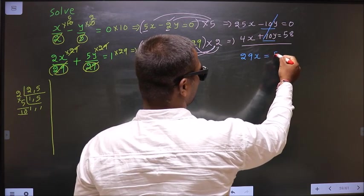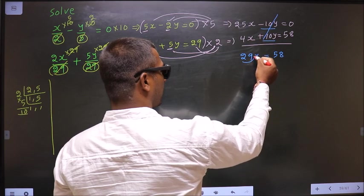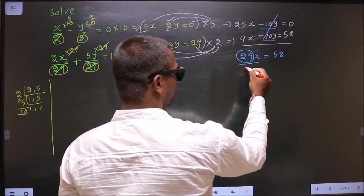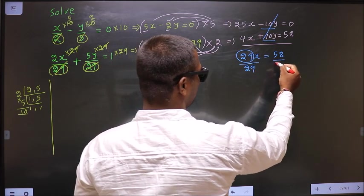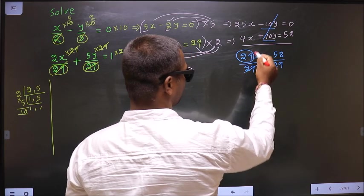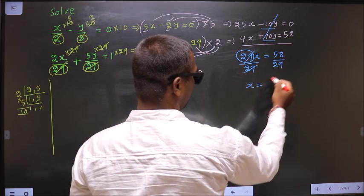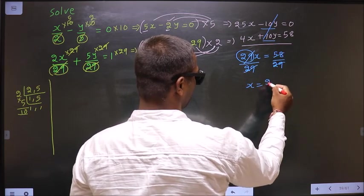Equal to 0 plus 58 is 58. So now to get x, I should remove 29. So divide by 29 on both sides. So this cancel out, I get x equal to 2.